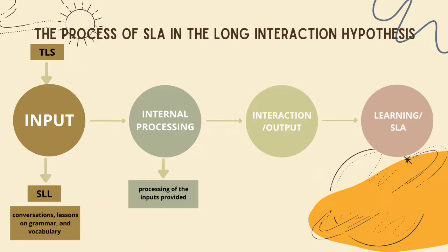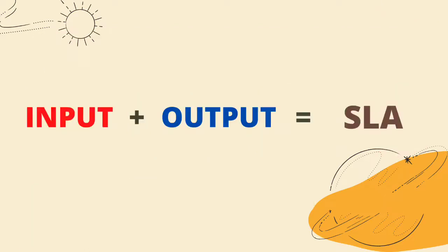After hearing the inputs provided, it proceeds to the process in which the second language learners digest and process the inputs they acquired, while the output or interaction stresses the importance of practicing and speaking to retain and further understand the input language. After so, learning and SLA happen. In summary, the combination of input and output is highly given importance in this theory as it is believed that interaction is not only the means to study the language, but also a way for learners to put what they have learned into practice to make SLA effective.